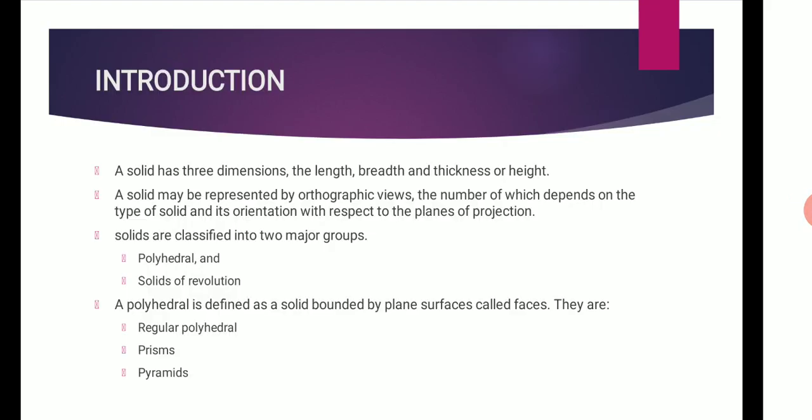Normally, a solid is nothing but a three-dimensional object which has length, breadth, and thickness. Solids may be represented by orthographic views, the number of which depends on the different types of solid and its orientation with respect to the projection planes.